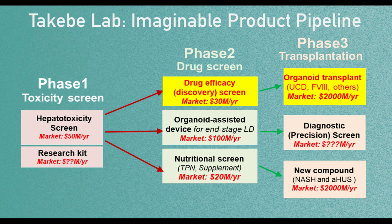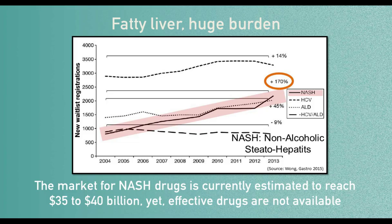The first main application is drug efficacy screening. Non-alcoholic steatohepatitis — NASH — is a growing concern and is now a leading cause for liver transplant patients in the United States. There is clearly a high medical need, but currently, surprisingly, there are no available effective drugs to treat NASH, despite an estimated huge future pharmaceutical market. This is partly because we lack an effective human model to recapitulate steatohepatitis in vitro. We are hoping to use organoids to model NASH conditions.